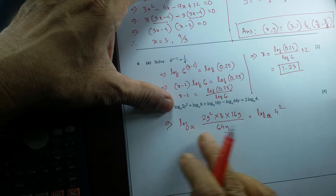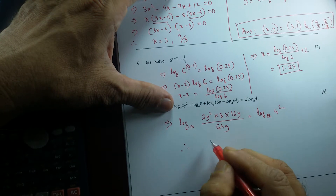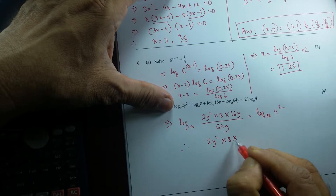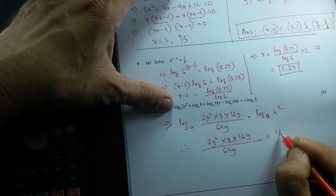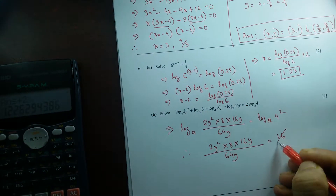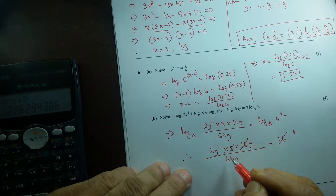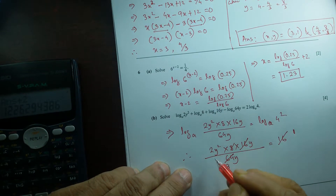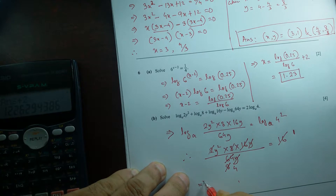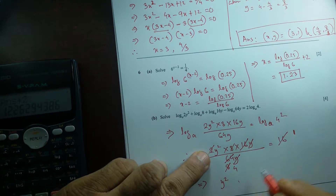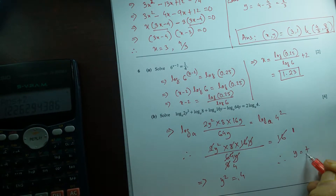So we have log base A of (2y squared times 8 times 16y divided by 64y) equals log base A of 4 squared. Since both sides have the same base and equal signs, the arguments must be equal. Therefore 2y squared times 8 times 16y over 64y equals 16. Cancelling 16 on both sides — careful, it becomes 1, not 0. Then 8 times 8 is 64, cancelling with the denominator, and cancelling y, I get y squared equals 4.